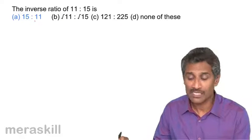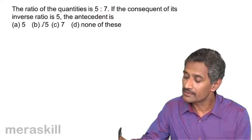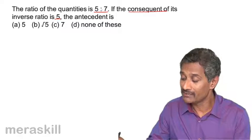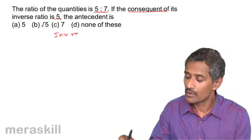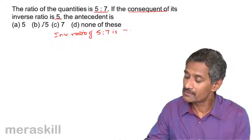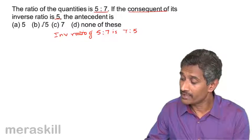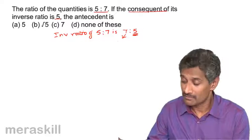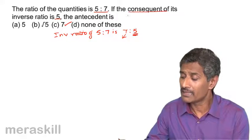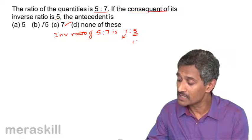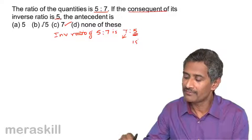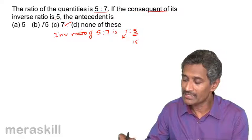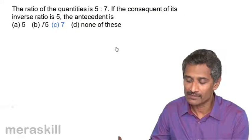Let's take the next example. The ratio of the quantities is 5 is to 7. If the consequent of its inverse ratio is 5, the antecedent is what? The inverse ratio of 5:7 is 7:5. It is told that the consequent of the inverse ratio is 5, which means the antecedent is going to be 7. So the answer is 7.